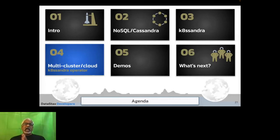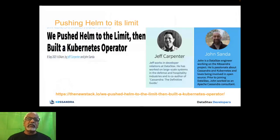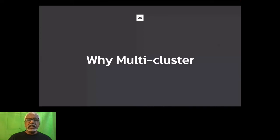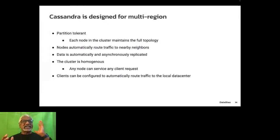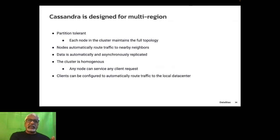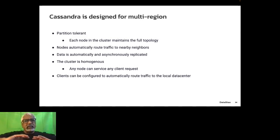For a single cluster that's it. But what about multi-cluster? We introduced an operator called the K8ssandra operator. We basically pushed Helm to its limits and then built this new operator. If you want to understand the rationale, there's an article on The New Stack. Why multi-cluster? Cassandra has always been designed for multi-region — partition tolerance is extremely important. Even if a set of nodes goes down, you should still be able to service requests. Nodes automatically route traffic to nearby neighbors using a gossip protocol.